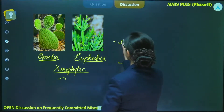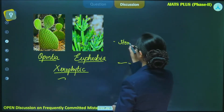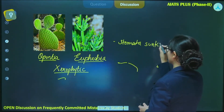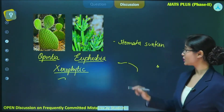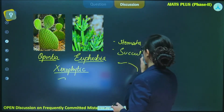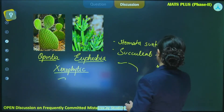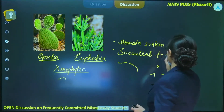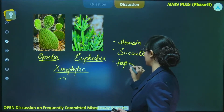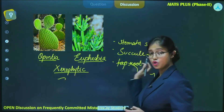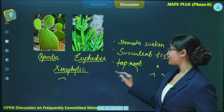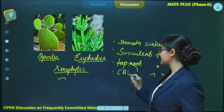The first adaptation is sunken stomata. Stomata are sunken because they have to reduce the loss of water. Next, they have succulent tissues. They also have a tap root system — they have to go deep into the soil to absorb water, as water availability is already scarce. They also have the CAM pathway for photosynthesis.